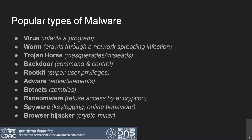A worm crawls through a network spreading infection — it has the capability of replicating itself by moving from one machine to another. It can be used as a carrier: if machine A is infected with a virus and there is a worm on that machine, the worm can carry the virus to another machine, install it there, and execute it. A worm can also execute many malicious activities on its own.